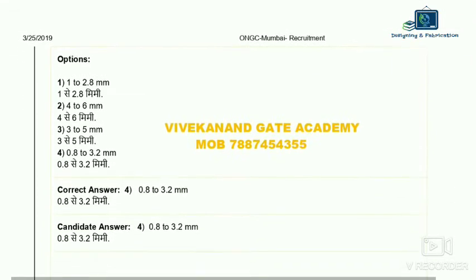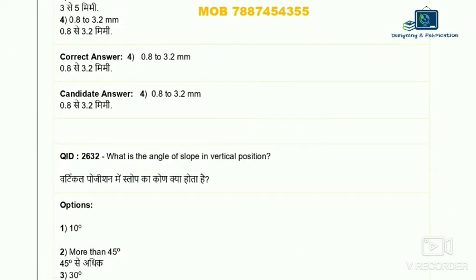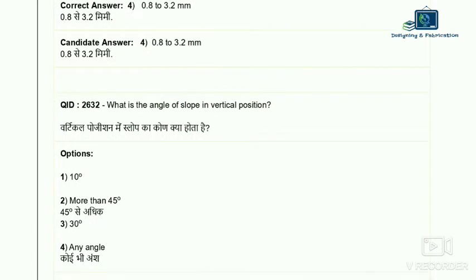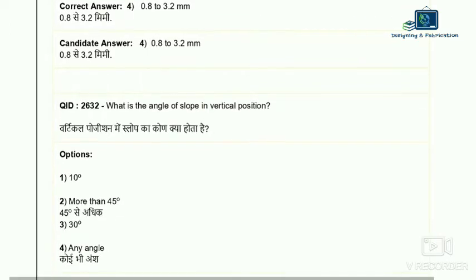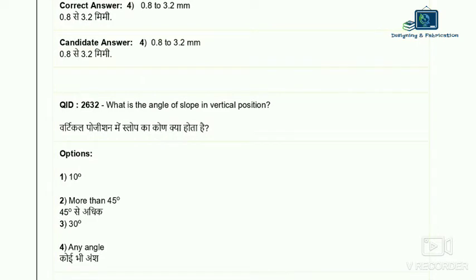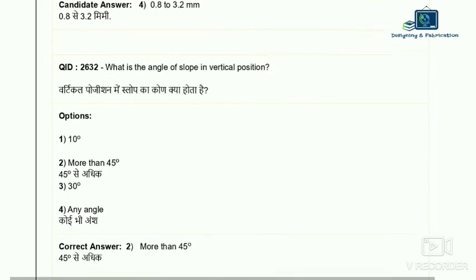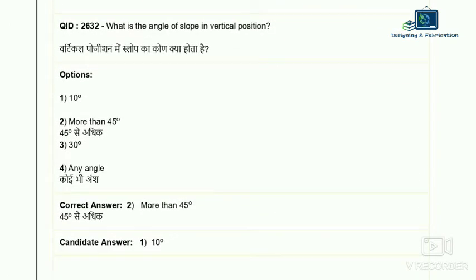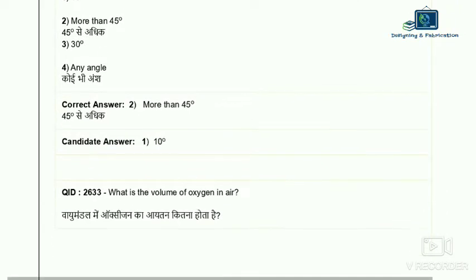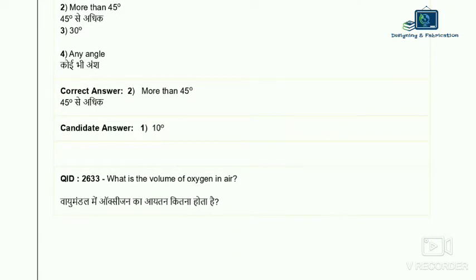Question 32: what is the angle of slope in vertical position welding? In vertical position, the slope or rotation is more than 45 degrees, unlike flat position. So the correct answer is more than 45 degrees.